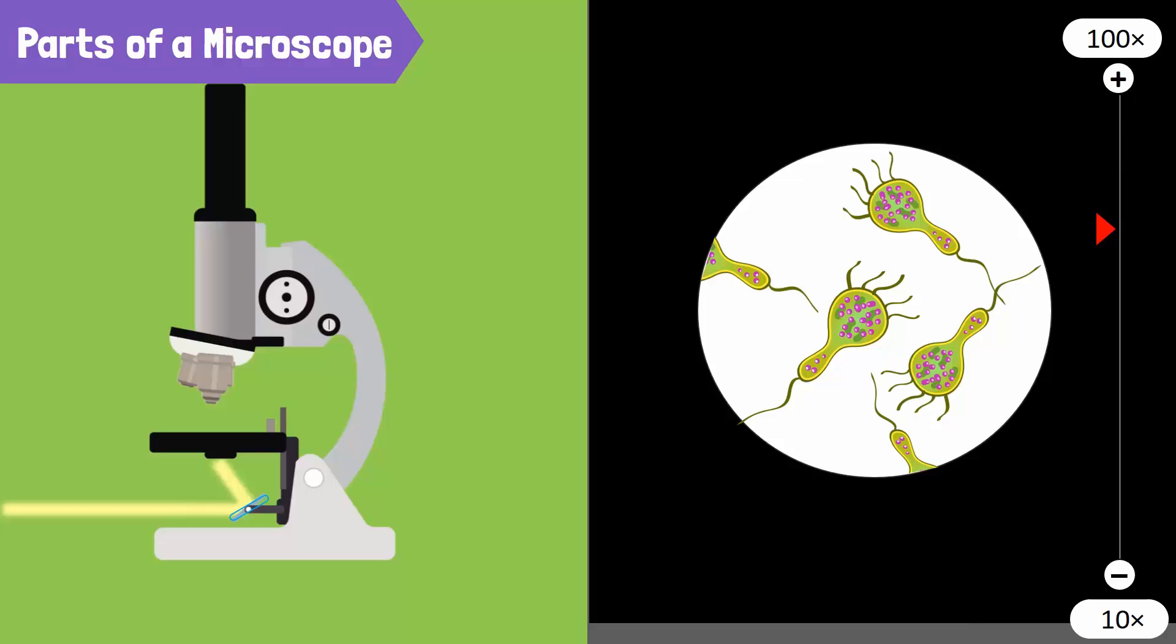The stage has a hole, which allows the light to reflect onto the specimen. The amount of light that reaches the specimen is controlled by a rotating disc beneath the stage. This is the diaphragm. It has different sized holes and is used to vary the intensity and size of the cone of light that falls on the specimen.